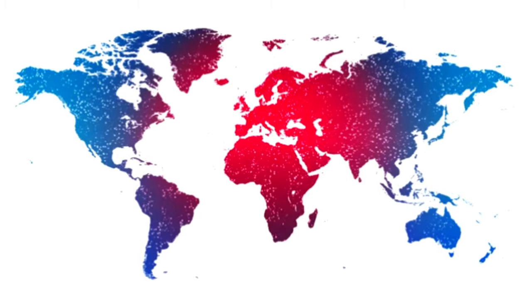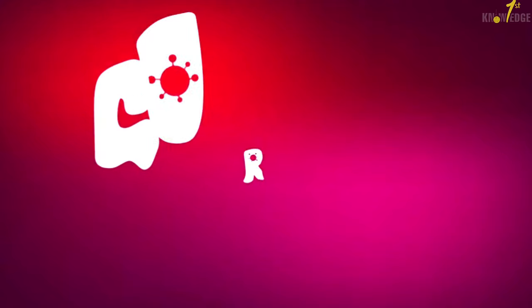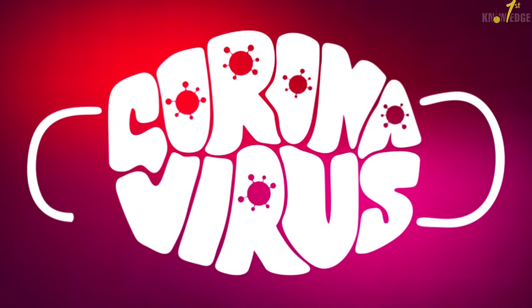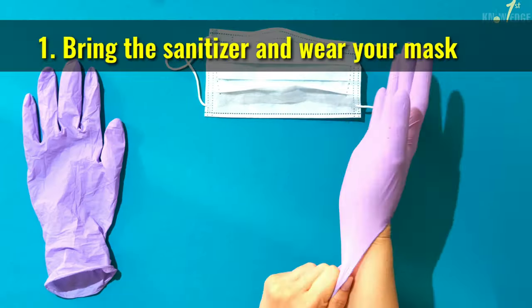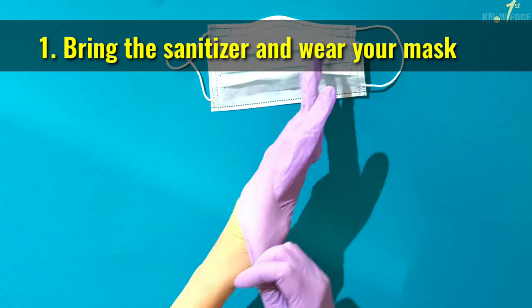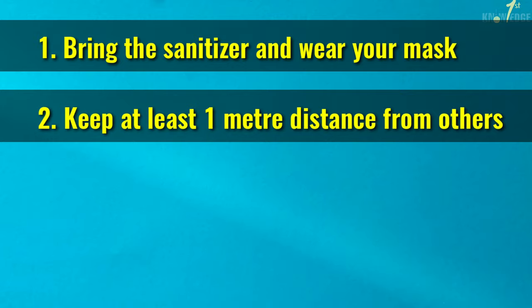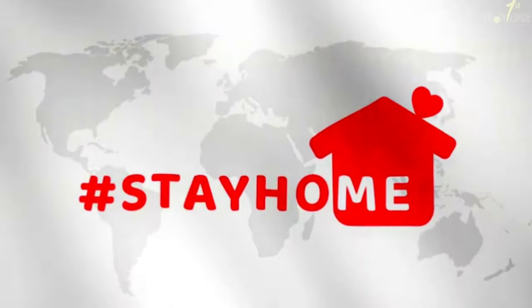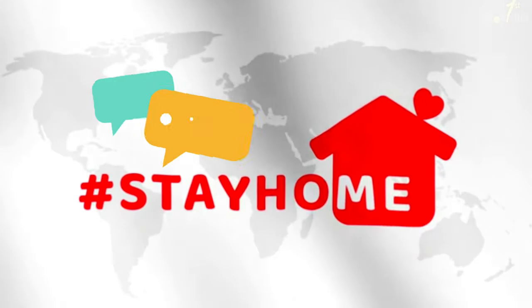COVID-19 is a virus that is affecting more and more people in our world these days. What can be done to prevent such a dangerous virus? Use sanitizer and wear your mask. Keep at least one meter distance from others. Keep your shopping time short and make a list. More information can be found at the link in the description.